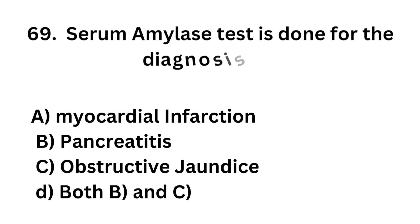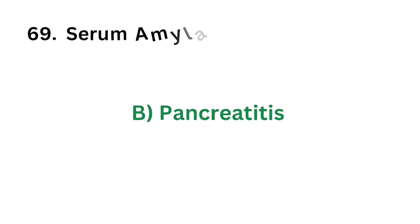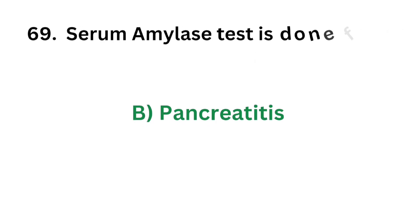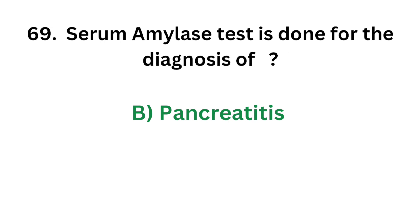Question number 69. Serum amylase test is done for the diagnosis of: Option A - Myocardial infarction; Option B - Pancreatitis; Option C - Obstructive jaundice; Option D - Both B and C. The correct answer is Option B, Pancreatitis. Serum amylase test is done for the diagnosis of pancreatitis.